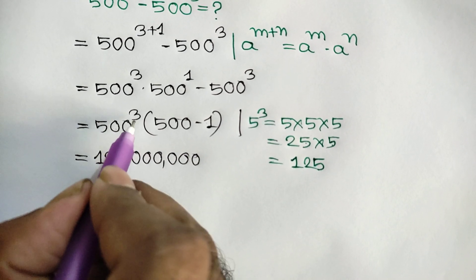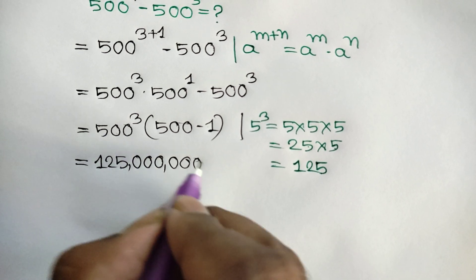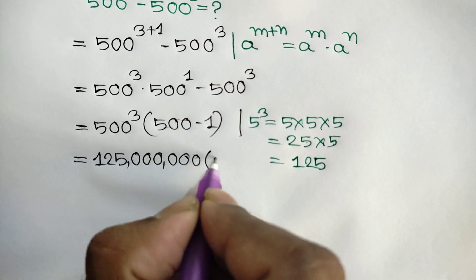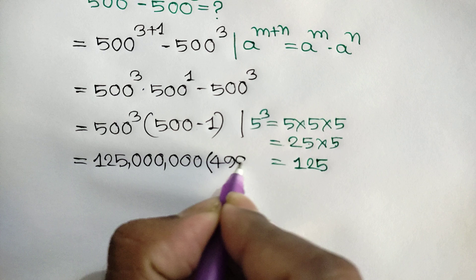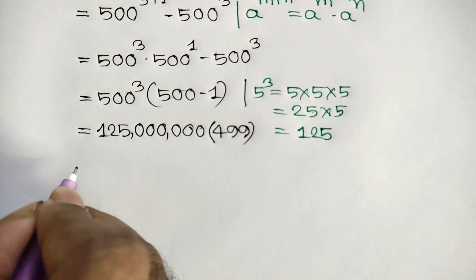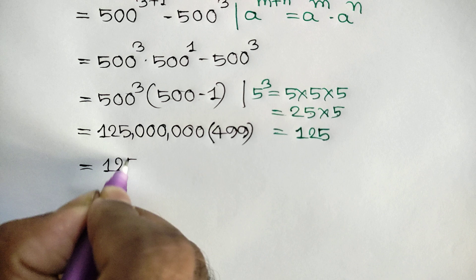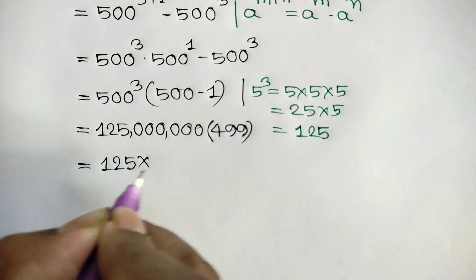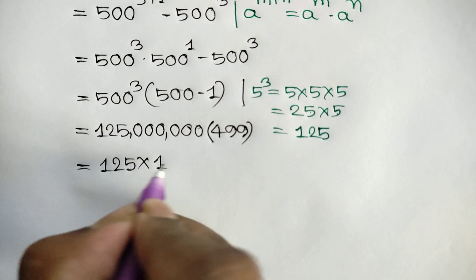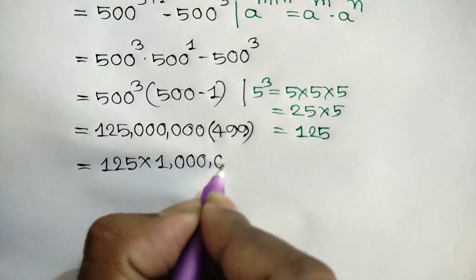So 500 cubed is 125 with 6 zeros, times (500 minus 1) which is 499. This equals 125 times 10 to the power 6 times 499.